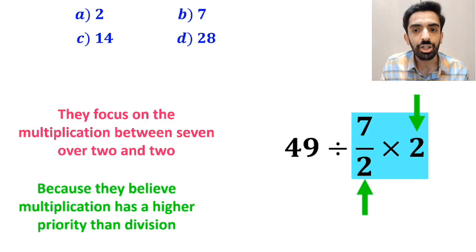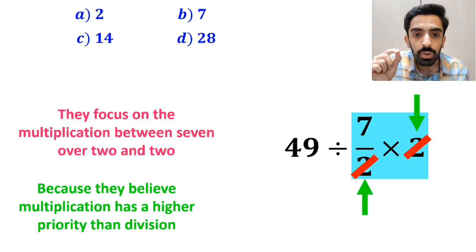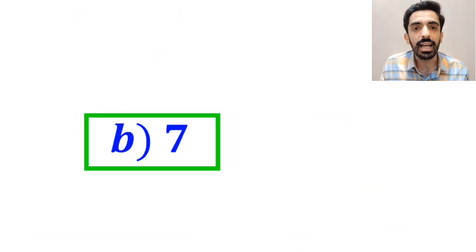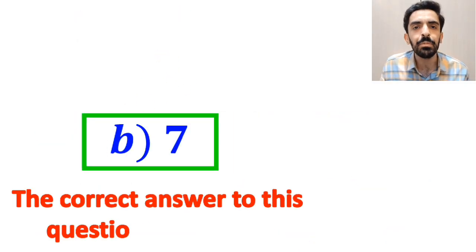As you can see in the image, they simply cancel out the 2s, and this expression simplifies to 49 divided by 7, which finally gives them the answer 7. And finally, they conclude that the correct answer to this question is option B.